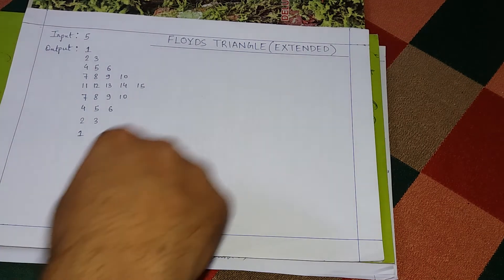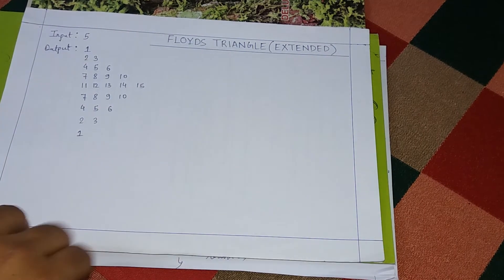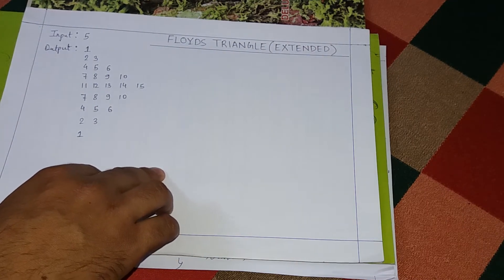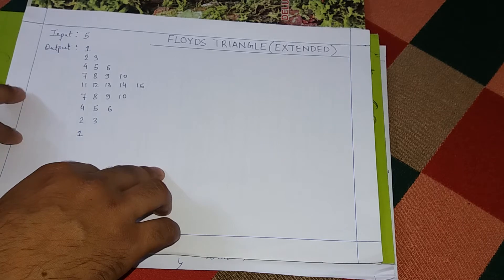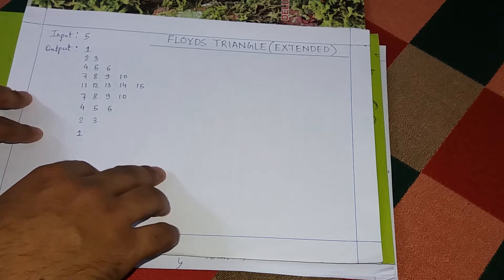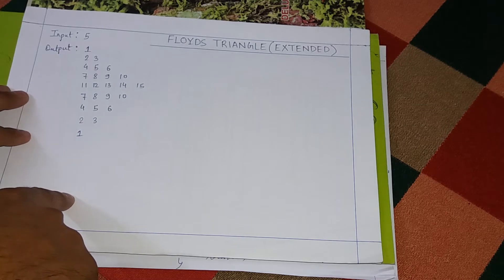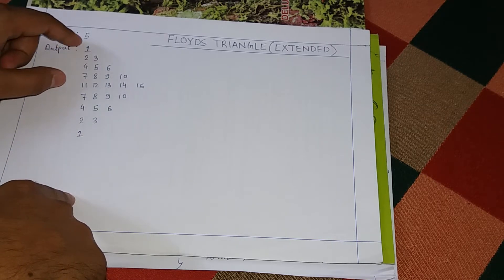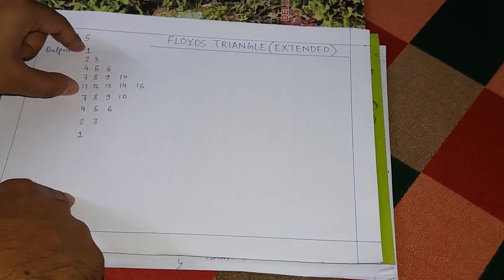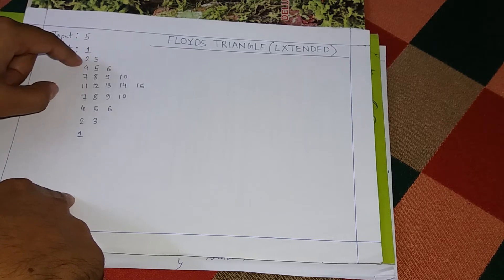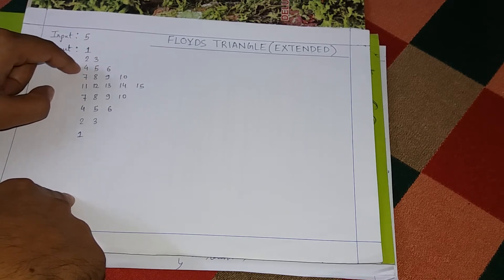Hello friends, today we will see another example of C programming pattern printing. This question is called Floyd's Triangle. In Floyd's Triangle, you simply print up to a certain number of rows in increasing order. For example, if you print one row, the next row will be two three, then four five six, and so on.